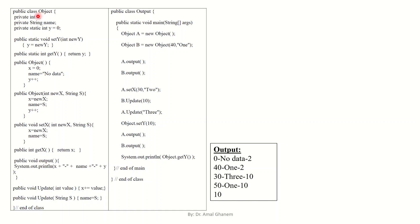We have a class called Object. We have private integer x, private String name, and private static integer y equals zero. We know that x and name are private instance variables of Object, but y is static — so it is shared by all objects — and the initial value is zero.